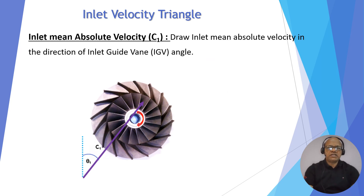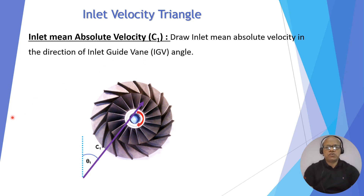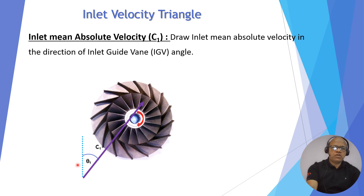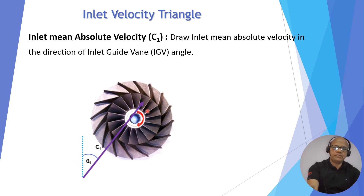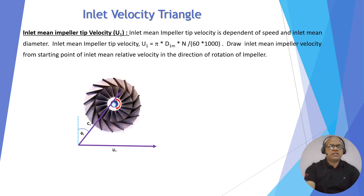Now we need to draw the inlet velocity triangle — the inlet mean velocity triangle. The inlet mean absolute velocity is shown as C1. Draw the inlet mean absolute velocity in the direction of the inlet guide vane angle, that is theta 1, which is the inlet guide vane angle with respect to axial. The inlet mean impeller tip velocity U1 is dependent on speed and inlet mean diameter, with expression U1 = π × D1M × N / (60 × 1000).